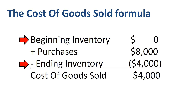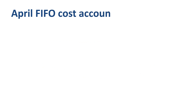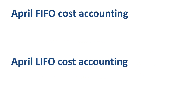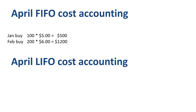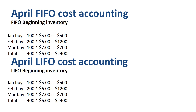Bonus topic with a new example. Let's calculate cost of goods sold using both the FIFO and the LIFO methods. FIFO stands for First In, First Out. LIFO stands for Last In, First Out. Both are cost accounting methods that can lead to very different numbers for cost of goods sold and gross profit. In the first quarter of the year, Toy Giraffe Inc. is building up its inventory: in January, 100 units at $5 per unit; in February, 200 units at $6 per unit; in March, 100 units at $7 per unit. The Q1 ending inventory for both FIFO and LIFO is 400 units with a total purchase price of $2400, averaging $6 per unit.